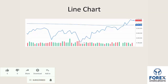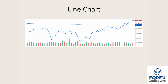Before we look at candlesticks in the main, what we're looking at here is a line chart. This line chart is basically showing the close of the price on a day-to-day basis. It's giving us information in terms of trend and in terms of market movement, but it's not really telling us that much information about what's happened during the day.